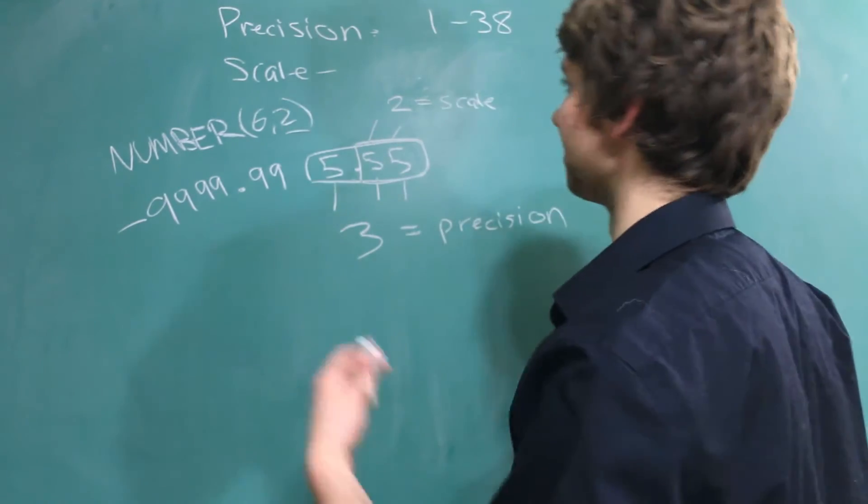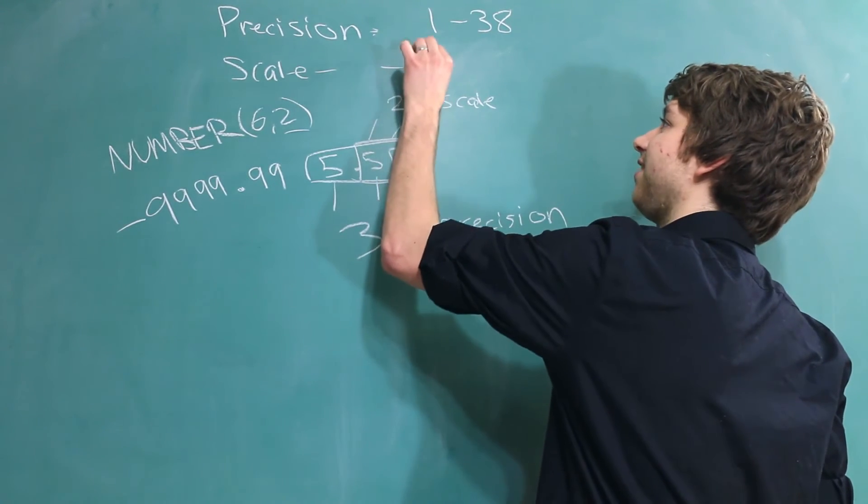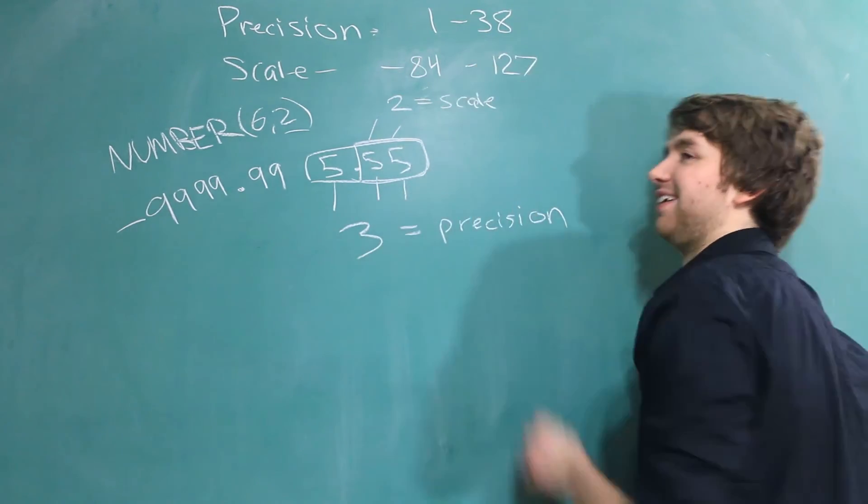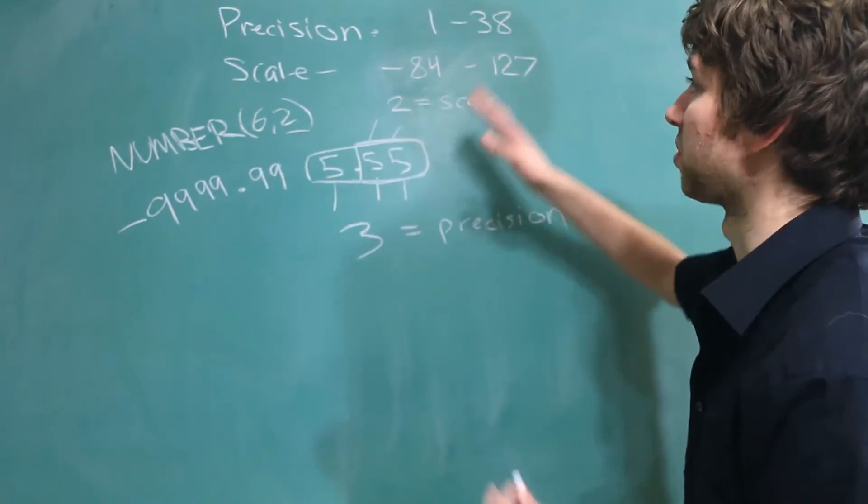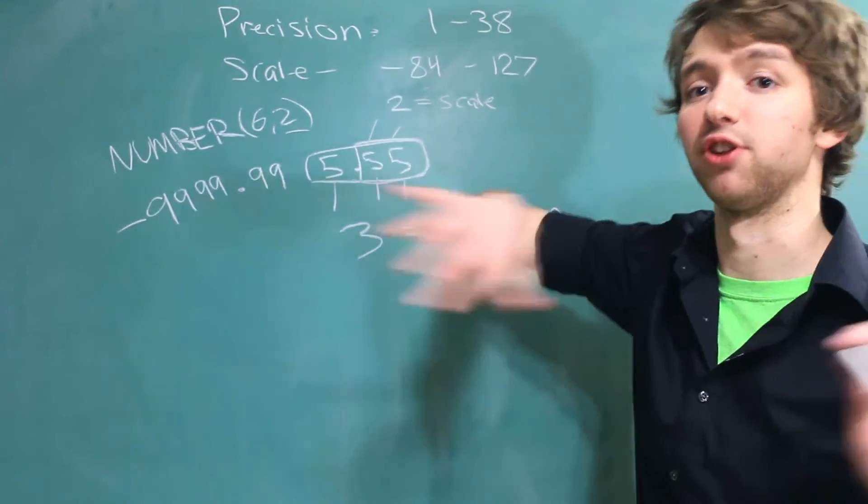The scale is a little bit interesting because the actual acceptable values for the scale is negative 84 up to 127. And I'll explain how that makes sense of having a negative scale and also having a scale that's bigger than your precision. But that is a topic for another video.